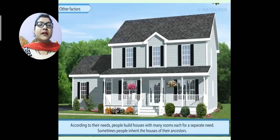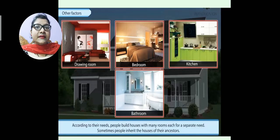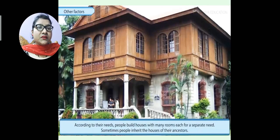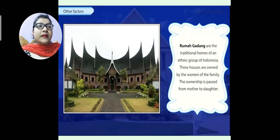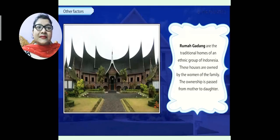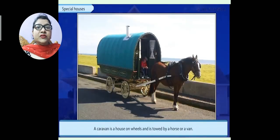People build different rooms according to their needs — dining room, bedroom, guest room, kitchen, bathroom. An important fact in your chapter is about rumagadang — the traditional homes of an ethnic group of Indonesia. These houses are owned by the women of the family, and ownership is passed from mother to daughter as ancestral property.